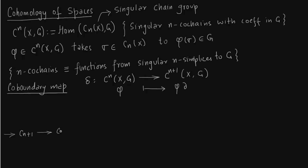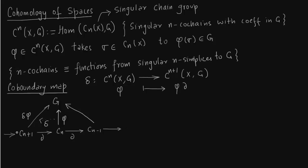First we draw the singular chain complex associated with homology, which we have drawn multiple times: C_n, C_{n+1}, and C_{n-1} are the chain groups connected by the boundary maps δ. There is a map φ from C_n to G, and the co-boundary map δ maps φ to δφ. Applying δ is nothing but first going in the chain complex from C_{n+1} to C_n, forming the commutative triangle from C_{n+1} to C_n to G.